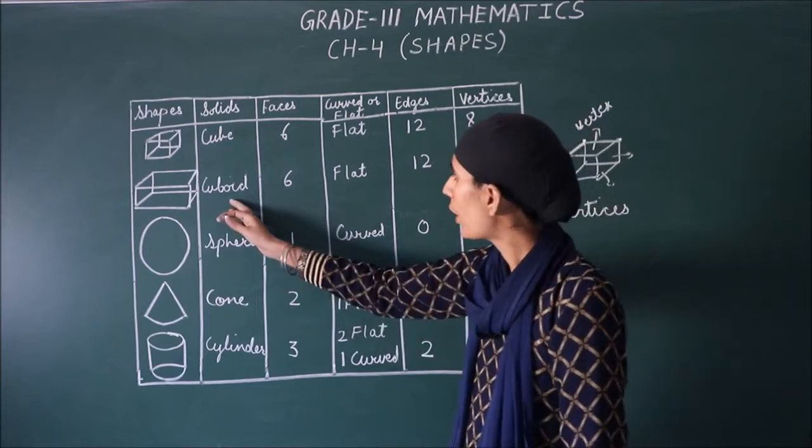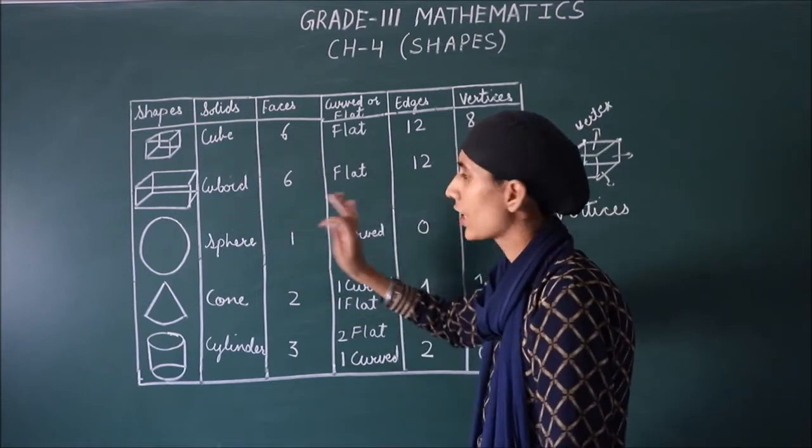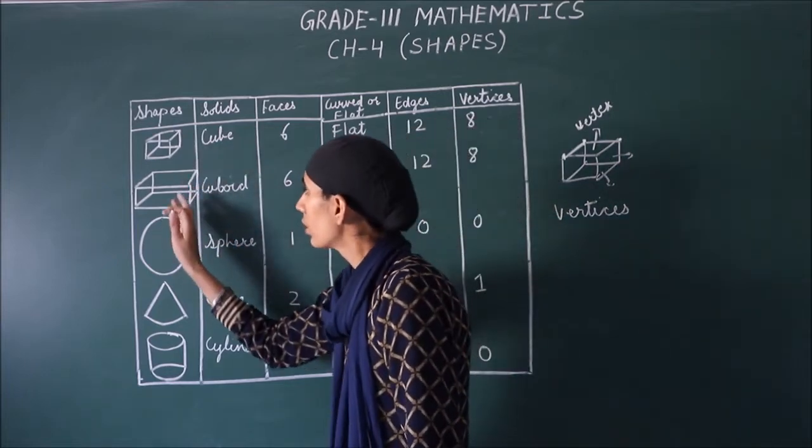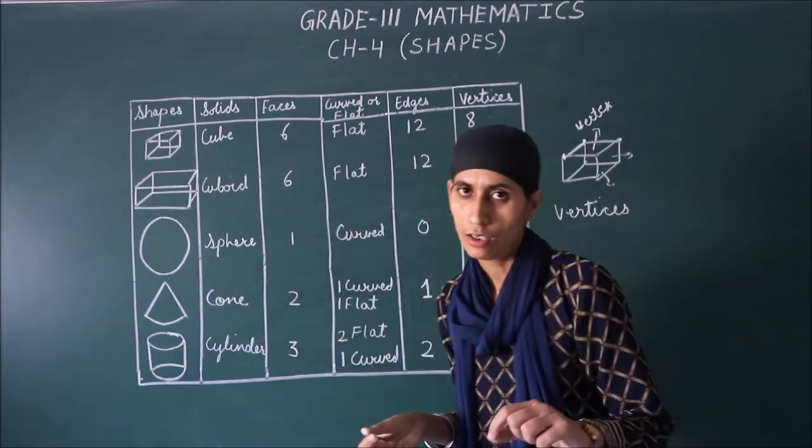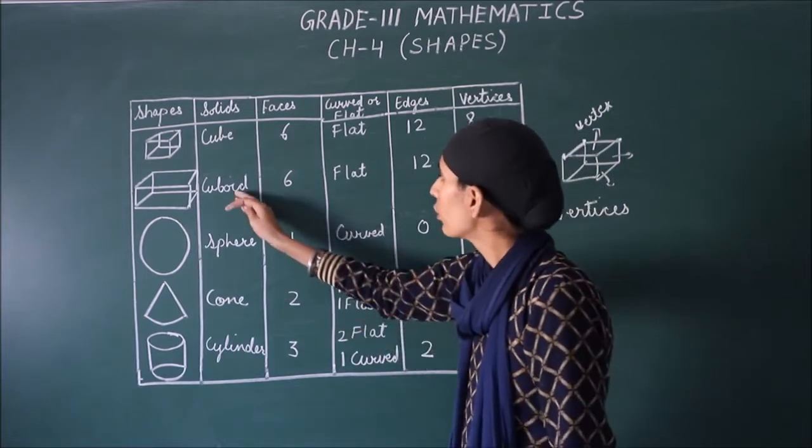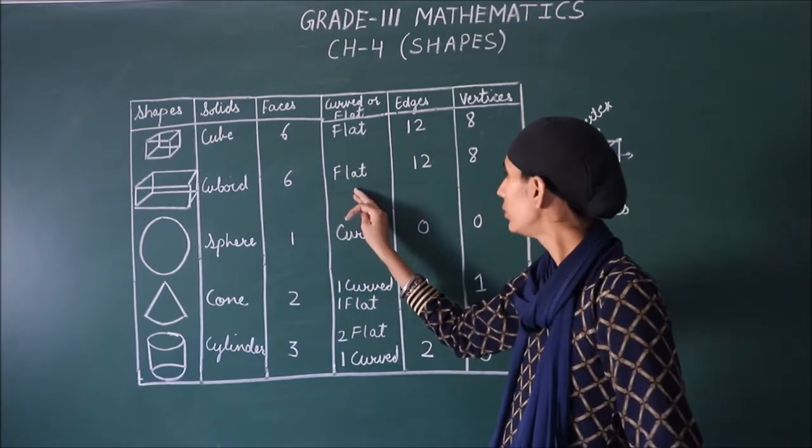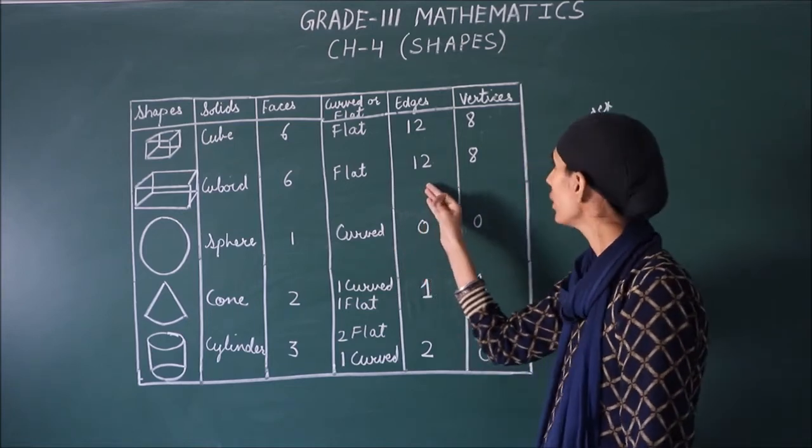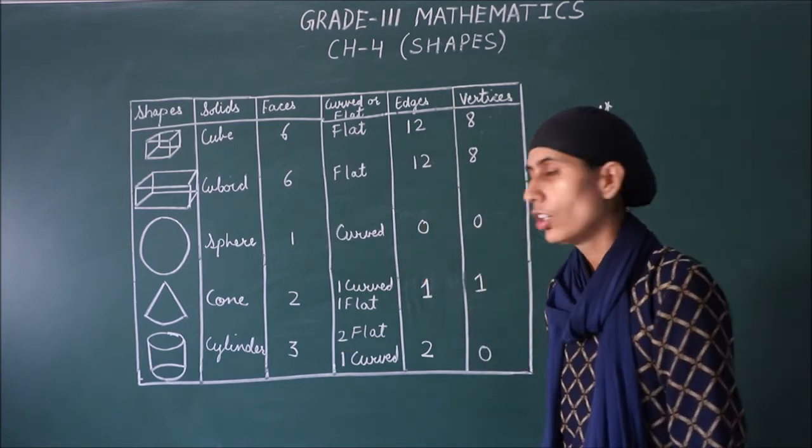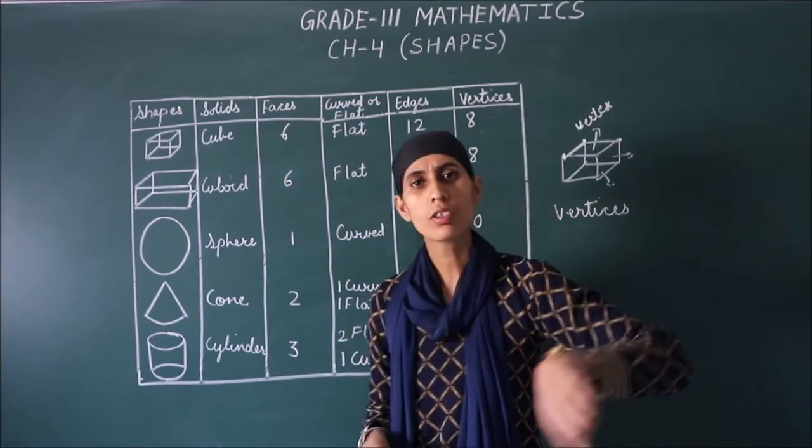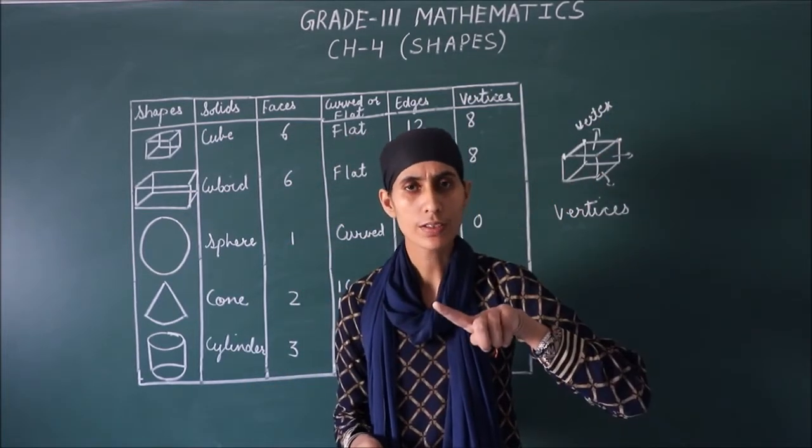Next, cuboid. Cube and cuboid are the same. Faces, vertices, edges. Because the two are only different in the shape. The rest are the same. Because in the cuboid, there are six faces. It becomes flat. Edges are 12. And the vertices are 8. Which is square, it becomes a face, because it becomes round.